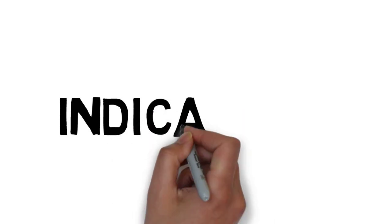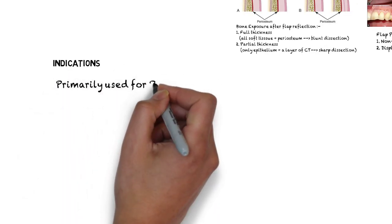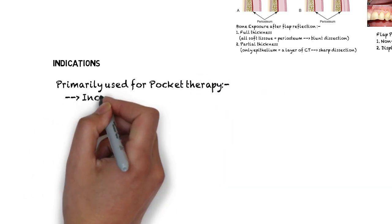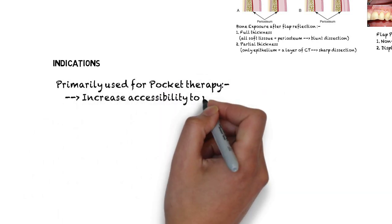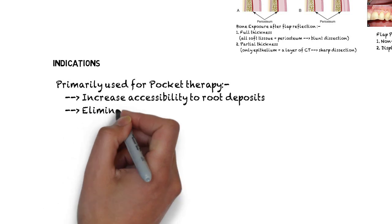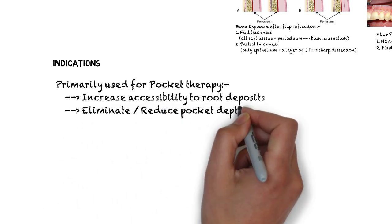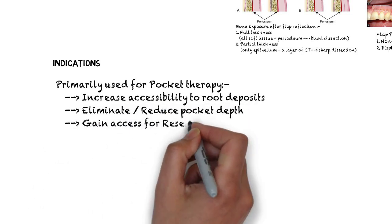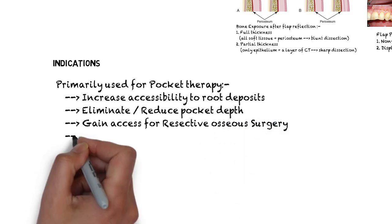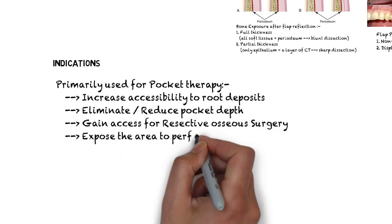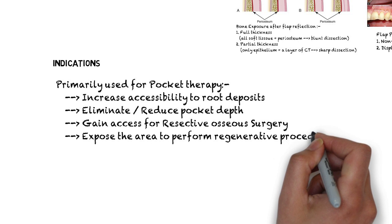Going on to the indications of periodontal flap surgery: periodontal flap surgeries are primarily used for pocket therapy to accomplish the following: to increase accessibility to the root deposits, eliminate or reduce pocket depth, gain access for resective or osseous surgical procedures, and to expose the area to perform regenerative procedures.